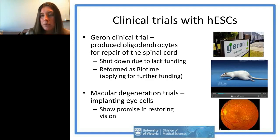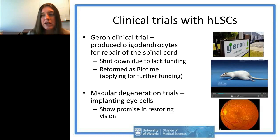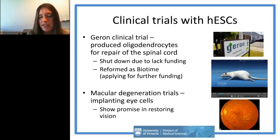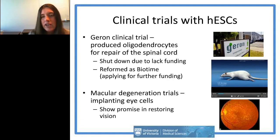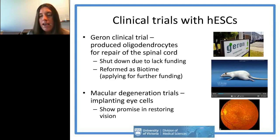It was groundbreaking in that they were actually able to get cells derived from pluripotent stem cells into people. More recently, Advanced Cell Technology has been running clinical trials using retinal pigment epithelium cells to treat macular degeneration, with more promising results and active recruitment. These are really good examples of bridging the gap and taking all the promise that pluripotent stem cells have had and actually bringing them to the clinic.